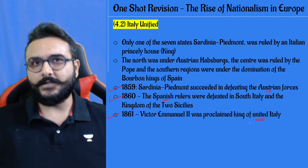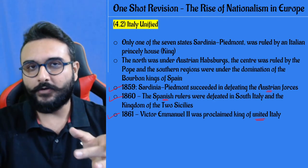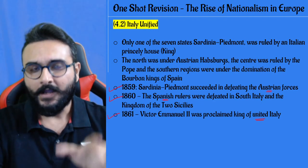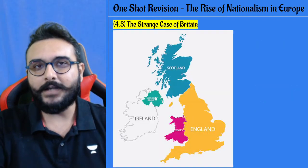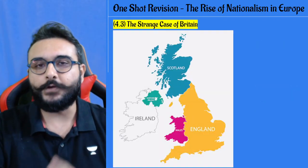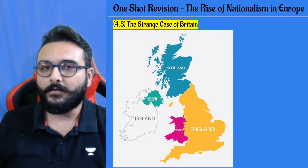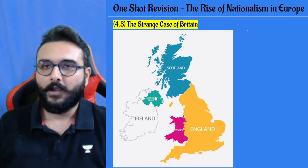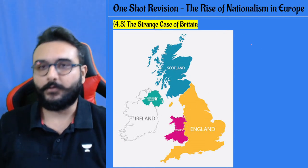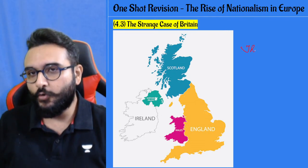In 1859 the Austrian rulers in Italy were defeated, in 1860 the Spanish rulers in Italy were defeated, and finally in 1861 King Victor Emmanuel II was proclaimed the King of united Italy.